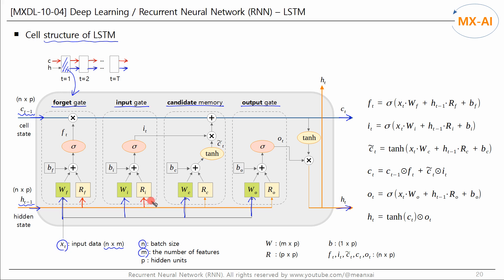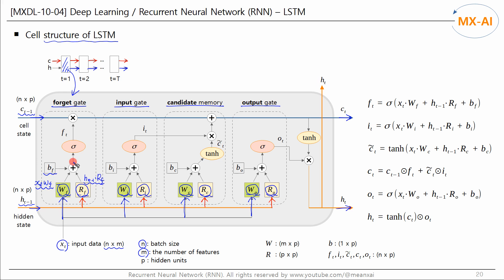The previous hidden state H of T minus 1 is also fed into each block. Each block has trainable parameters W multiplied by XT, and trainable parameters R multiplied by H of T minus 1. Each gate has its own unique W — WF, WI, WC, and WO — and each gate also has RF, RI, RC, and RO. In the FORGET gate, XT dot WF plus H of T minus 1 dot RF plus BIAS are computed, then the sigmoid activation function is applied to the result. This is FT, the output of the FORGET gate.